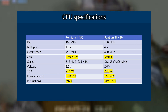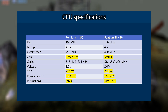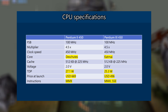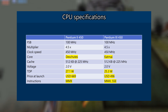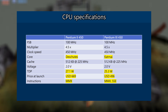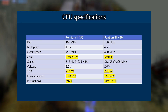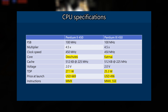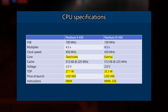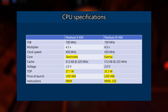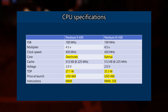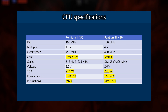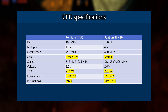Here we've got a table of all the specifications and we can see that the Pentium 2 and the Pentium 3 are very similar. The Front Side Bus, the Multiplier, the Clock Speed, the Cache, the Voltage — that is all identical. What is different is the core: we've got the Deschutes for the Pentium 2 and the Katmai for the Pentium 3. The TDP is slightly different, the price at launch is also slightly different, and the main difference really is the instruction set. The Pentium 2 only supports MMX, whereas the Pentium 3 also supports the SSE instruction set.